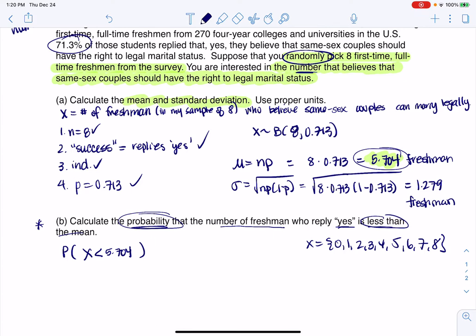Now keeping in mind my sample space, let me write it over here. It was 0, 1, 2, 3, 4, 5, 6, 7, 8, right? That would have been the top row on my PDF table if I made one. And I want to start inside the parentheses and think about which X values are less than 5.704. So 0 is, 1 is, 2 is, 3, 4, 5, and then I run out. 6 is not less than the mean, 7 is not less than the mean, and 8 is not less than the mean. So really what this problem is asking me is saying, hey, what's the probability that X is less than or equal to 5?